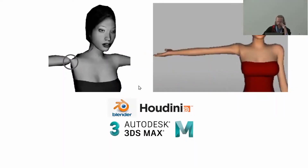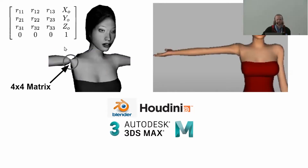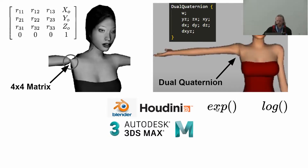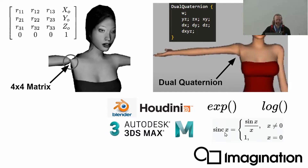One reason people in the games industry care a lot about dual quaternions is that they solve the candy wrapper effect bug — where a character's skin behaves like a balloon. This woman was animated using 4x4 matrices, which is terrible for animation. This other arm was animated using dual quaternions. Blender, Houdini, 3D Studio Max, and Maya all give you the option to use dual quaternions. To apply them, you need the exponential and logarithm functions. At Imagination Technologies, our GPUs support a function called sinc, which feeds into exponential and logarithm and speeds them up.